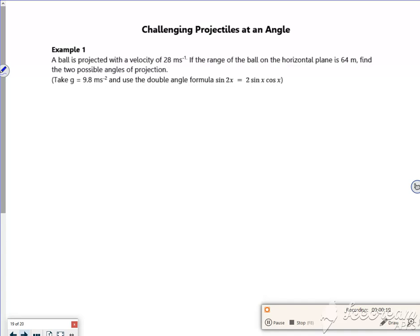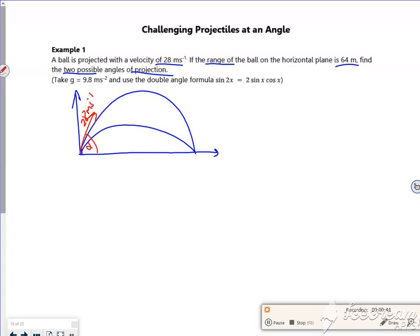I've got one here that says a ball's projected with a velocity of 28 m/s. The range of the ball is 64 m. Find the two possible angles of projection. So I've got it potentially going really steep or really shallow, and that's 28 meters per second, call it alpha.